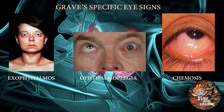Now we are going to talk specifically about Graves' specific eye signs. There are three main Graves' specific eye signs: exophthalmos, or bulging of eyes; ophthalmoplegia, or extraocular muscle paralysis; and chemosis, which is the redness of the eyes.